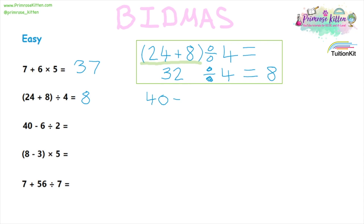Next, we have 40 minus six divided by two. We need to look at our BIDMAS. We see we have a subtraction and a division. The division is the bit that needs to be done first. So six divided by two will give us three. Then we have 40 minus three, giving us 37.